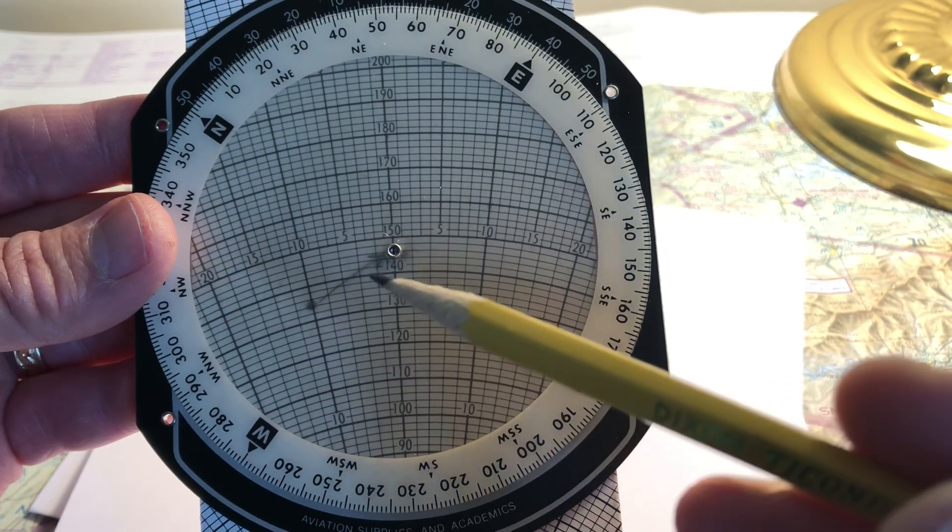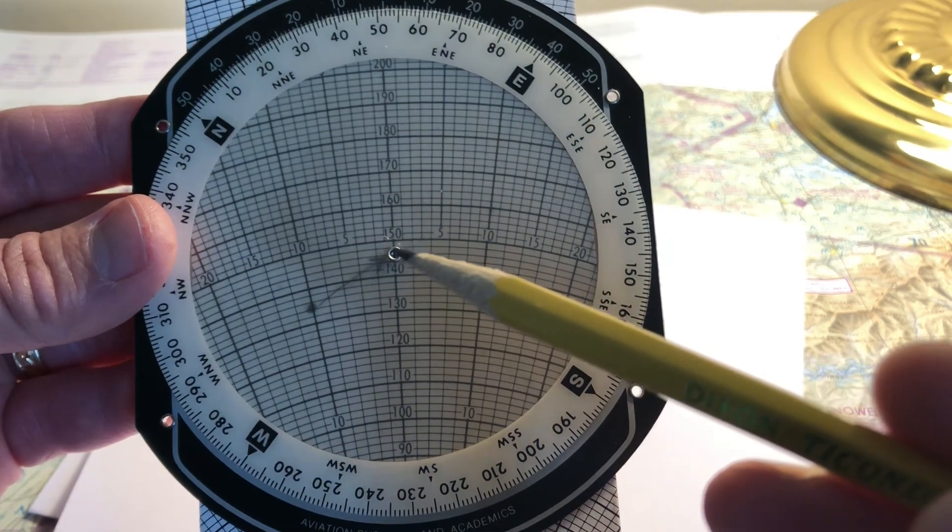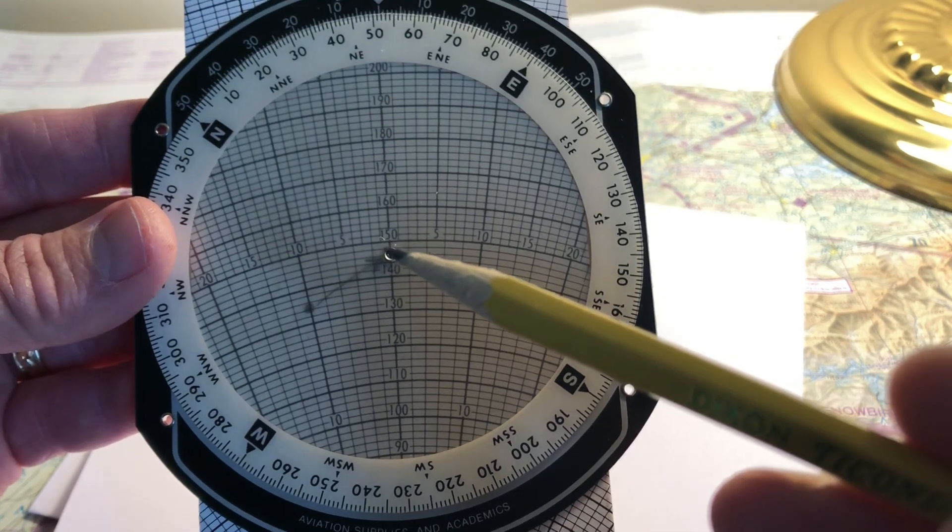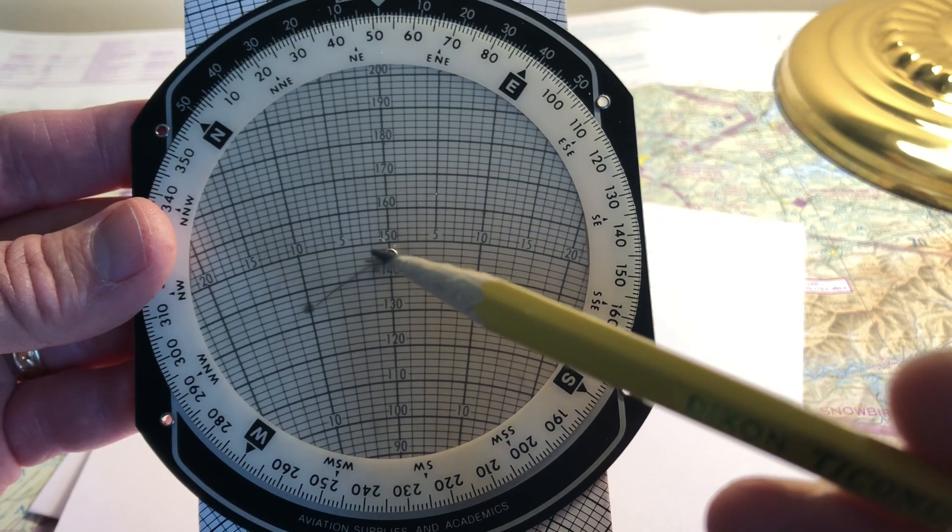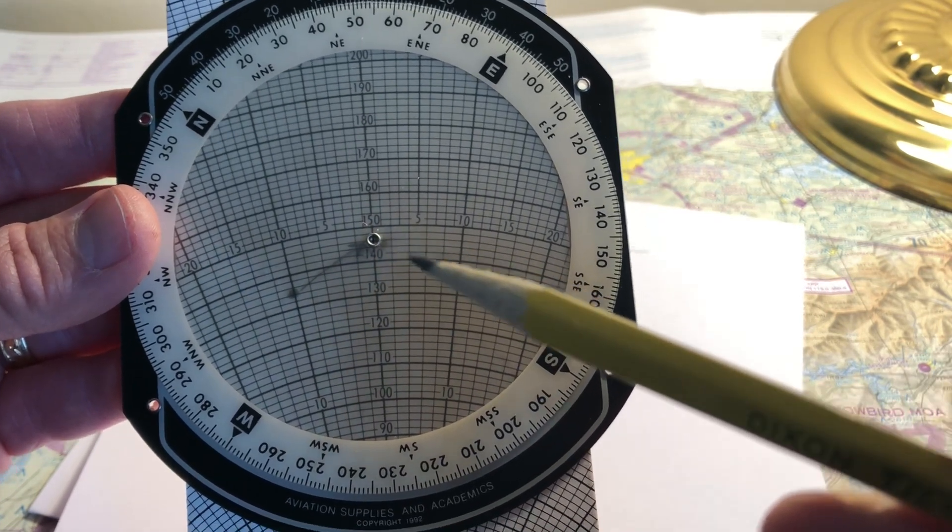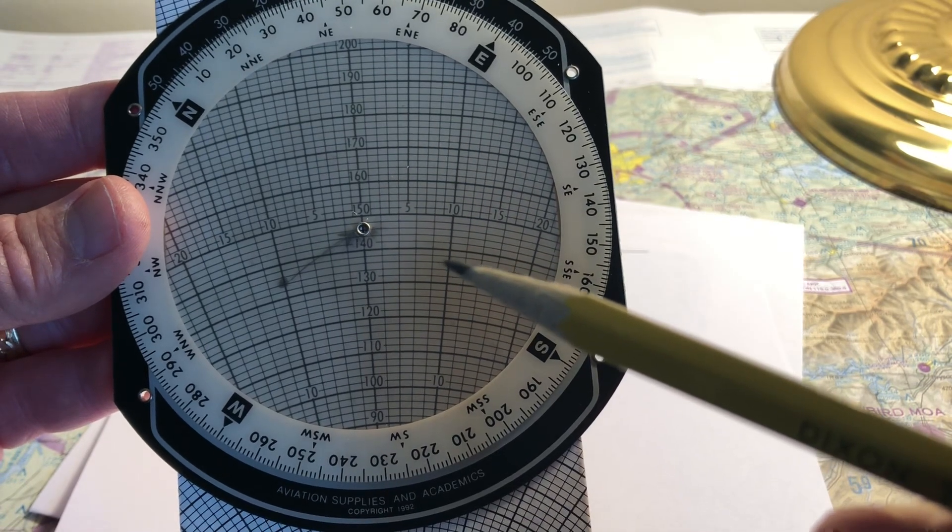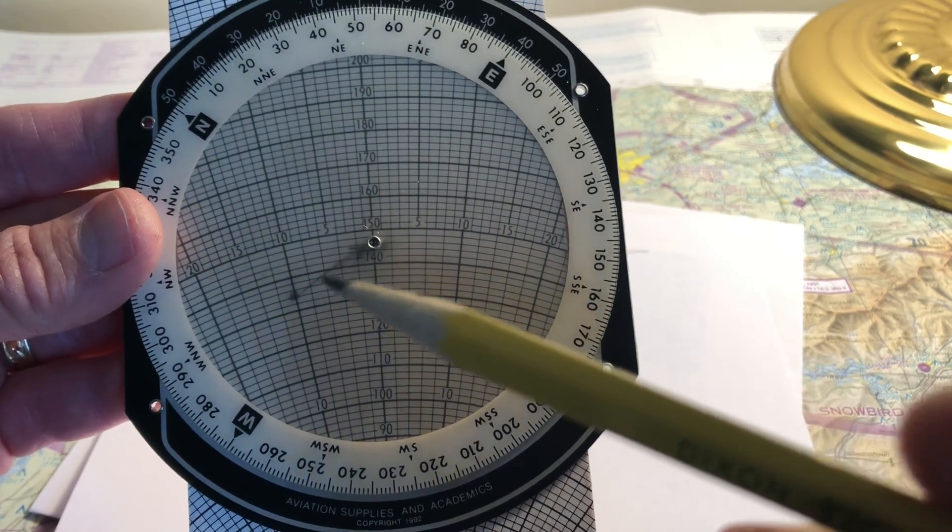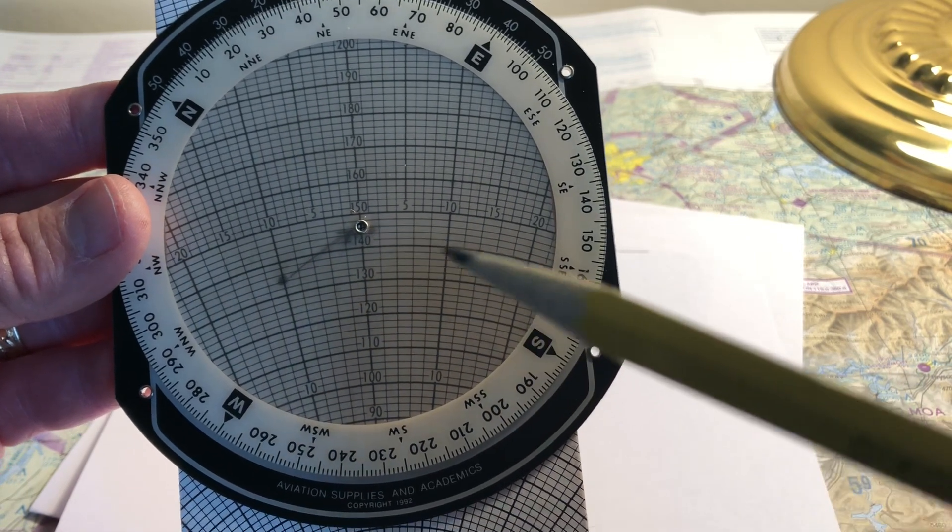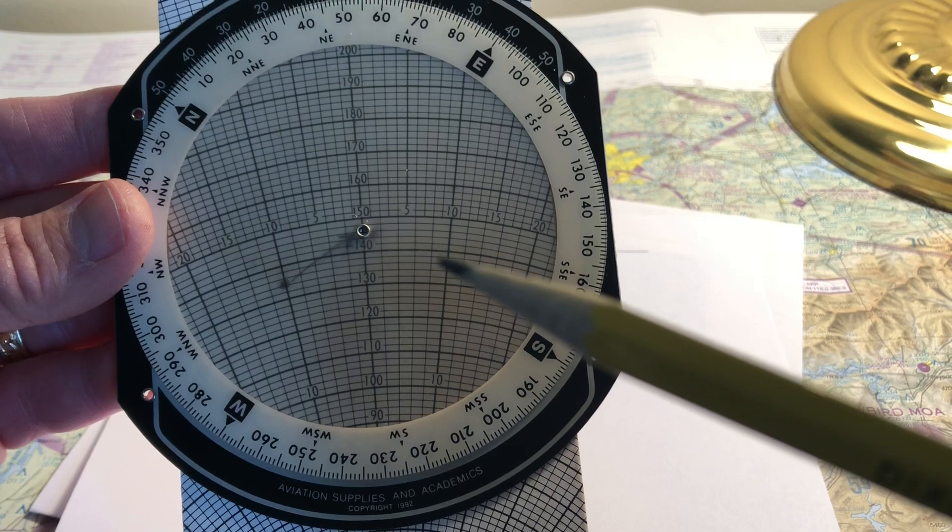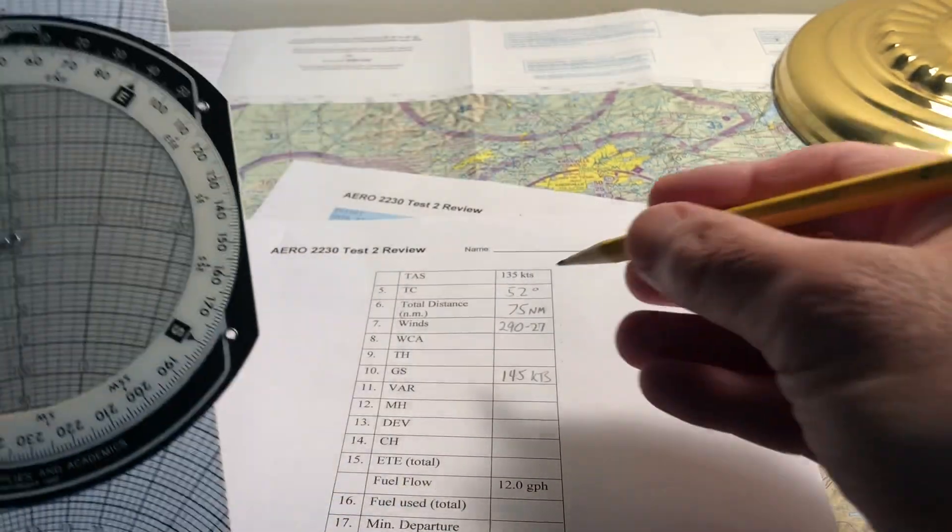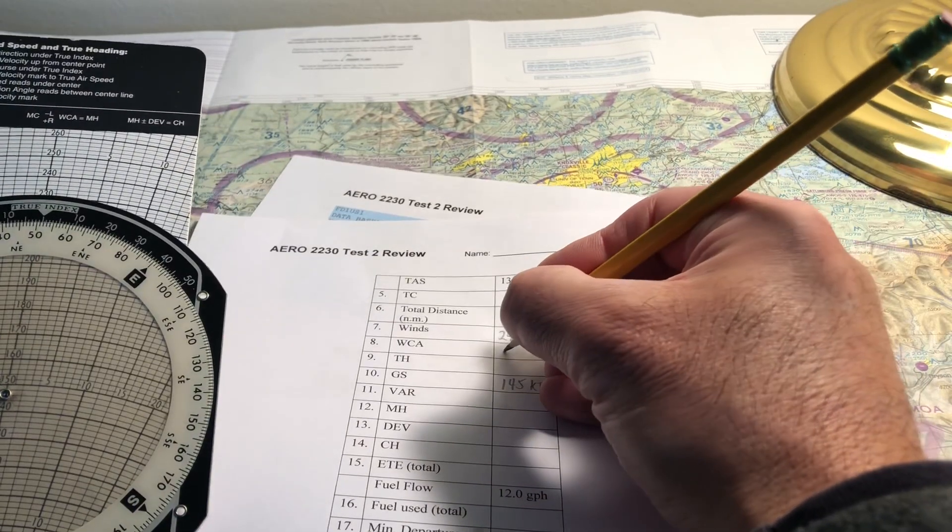You can see this by imagining turning to the left. If you had to turn your airplane from a 90 degree heading to an 80 degree heading, turning left, that would be subtracting. If you had to turn right from 90 to 100, that would be adding. So if the wind dot is on the left side of the center line, it's subtracting, it's on the right side of the center line, you're actually adding. So in this case, it's minus 10. So the wind correction angle is minus 10 degrees.